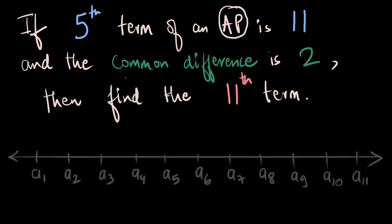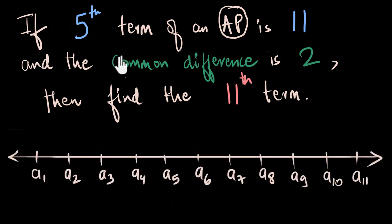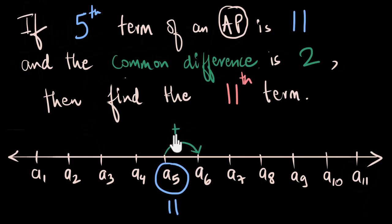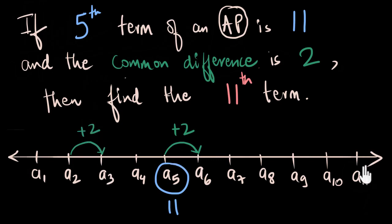As a first step, I'm going to bring in the number line. Let's read the question again and see if we can put things from here onto our number line. We know that the 5th term is 11, so A5 equals 11. We know that the common difference is 2, which means the jump from 5th to 6th is 2 units — in fact, any jump from one term to the next is 2 units. And we want to find the 11th term, so that's our question mark.